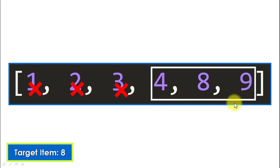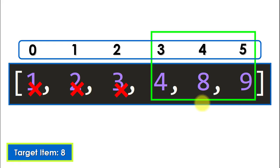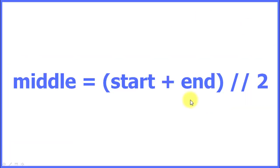We continue searching in the other half of the list, where elements greater than the middle element are found — because that is the only place the target item could be. It might not be there, but if it is, it has to be in this half. We now restrict our interval to indices between three and five and repeat the process, selecting the middle index of just that smaller interval.